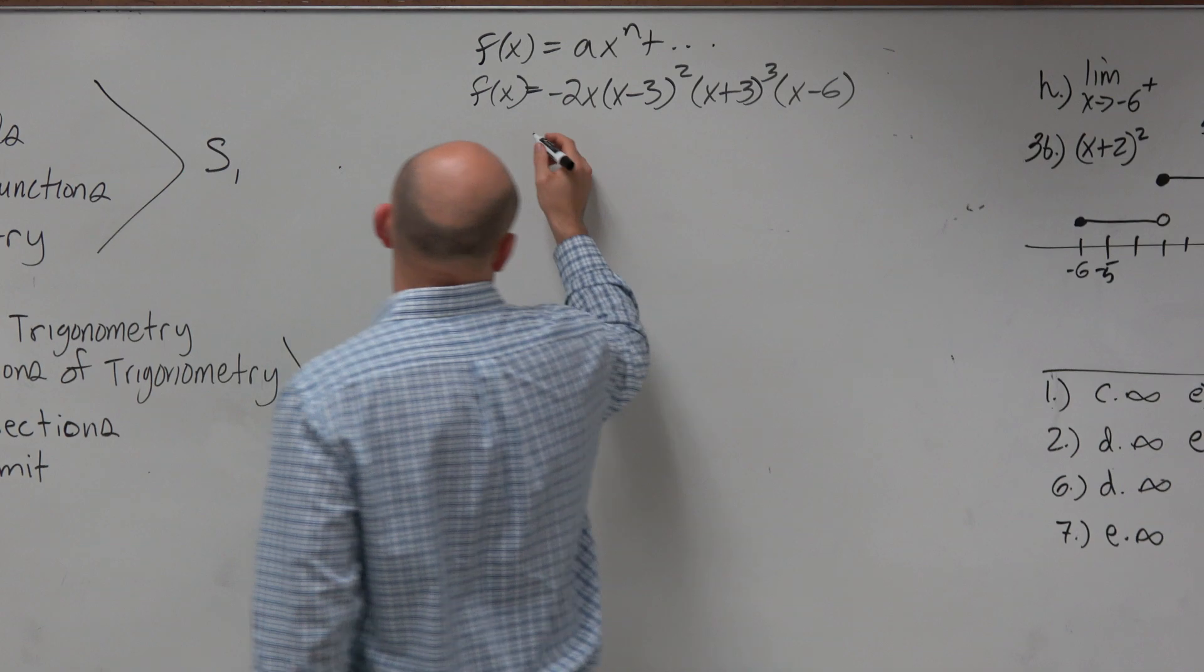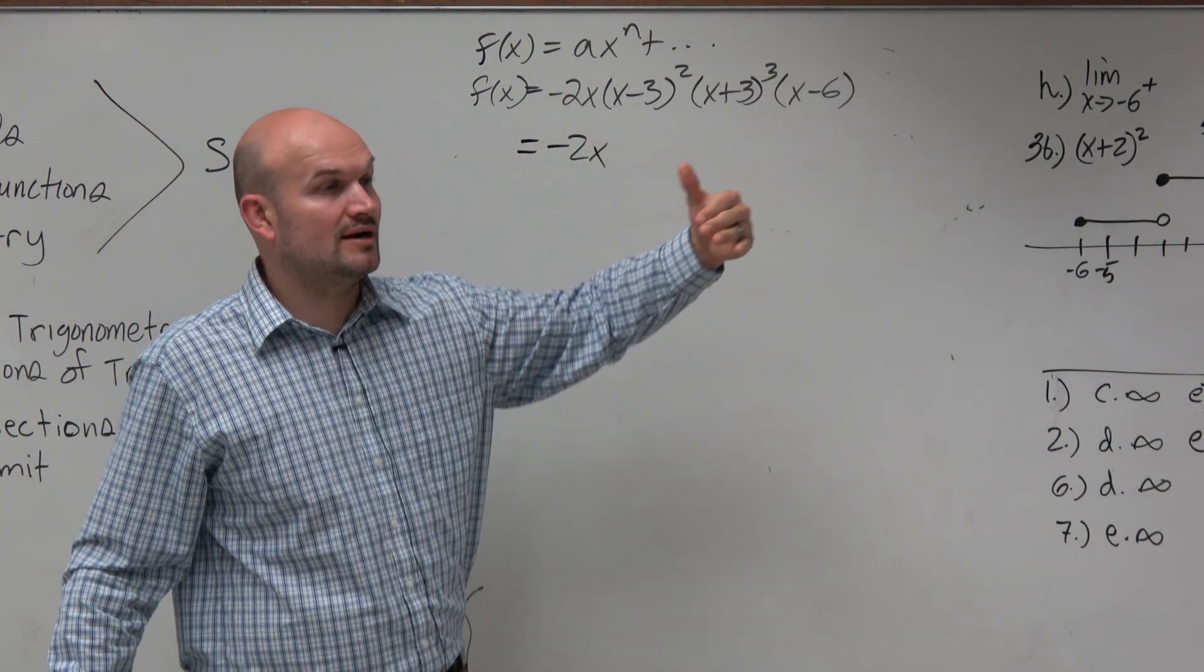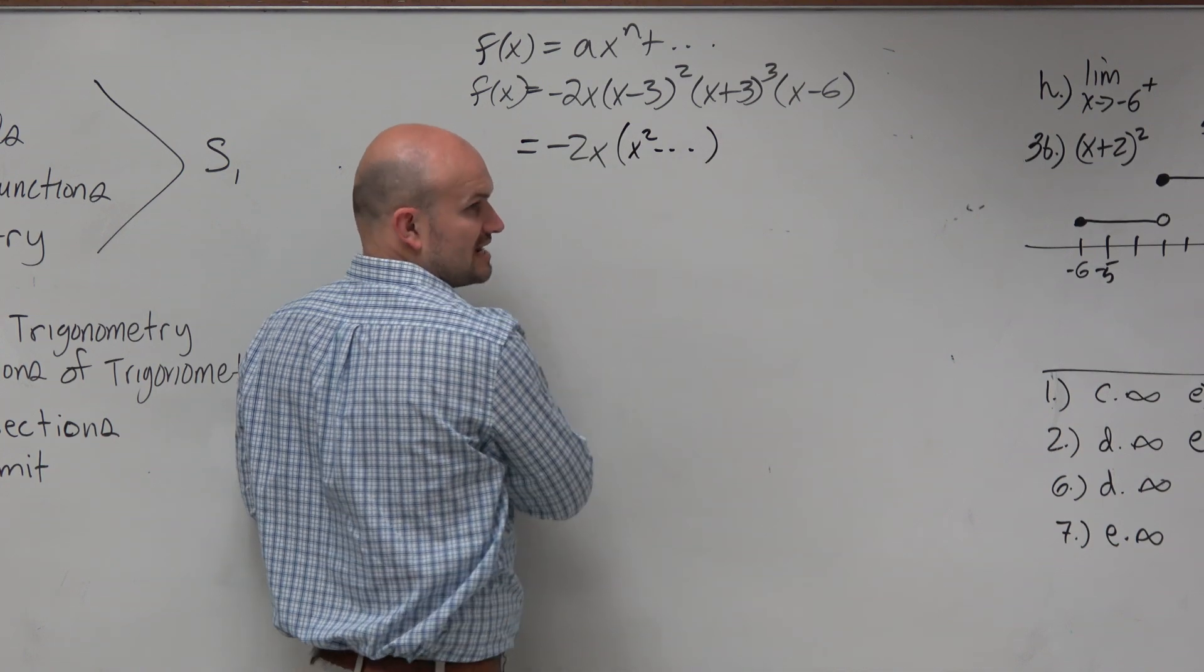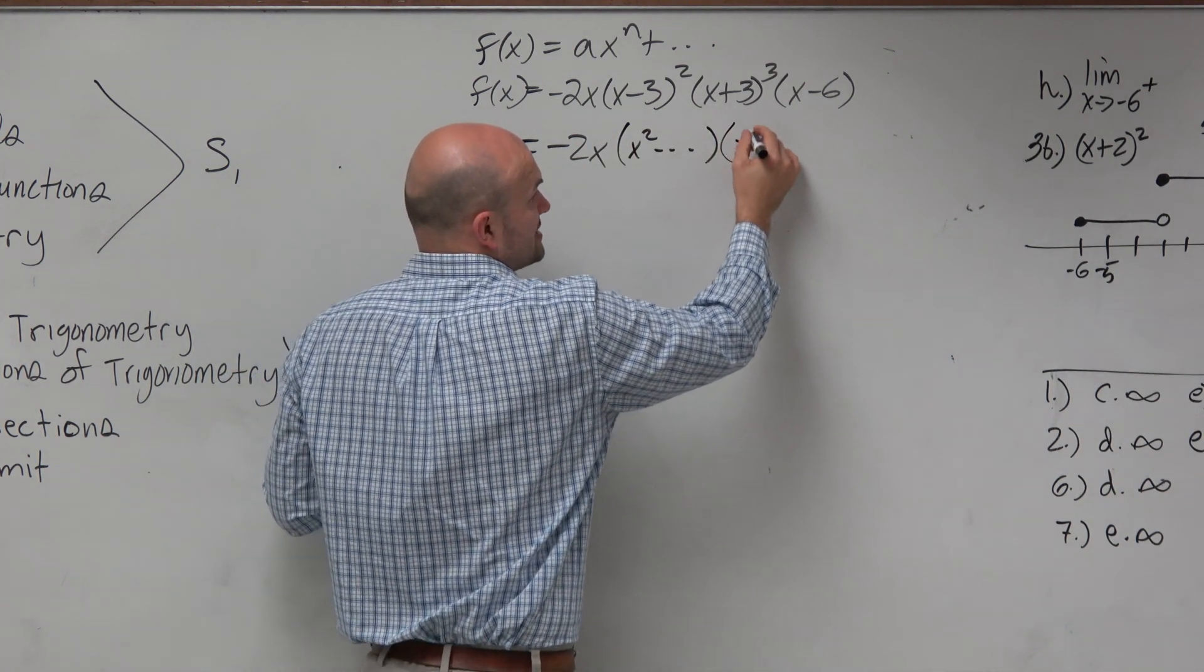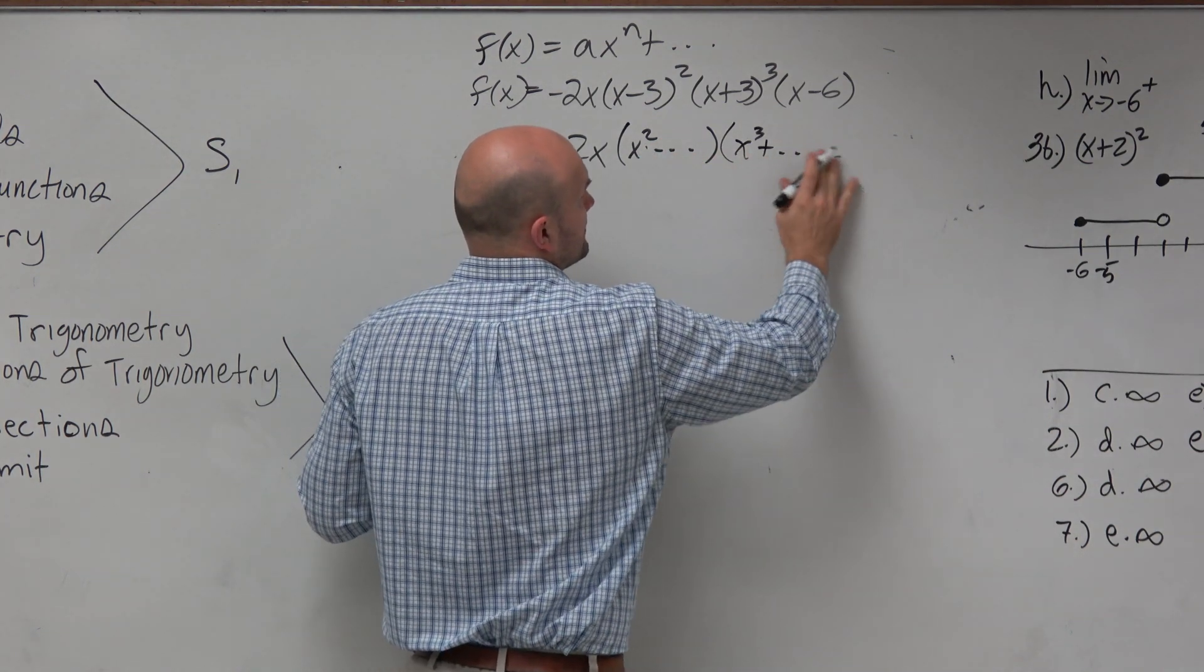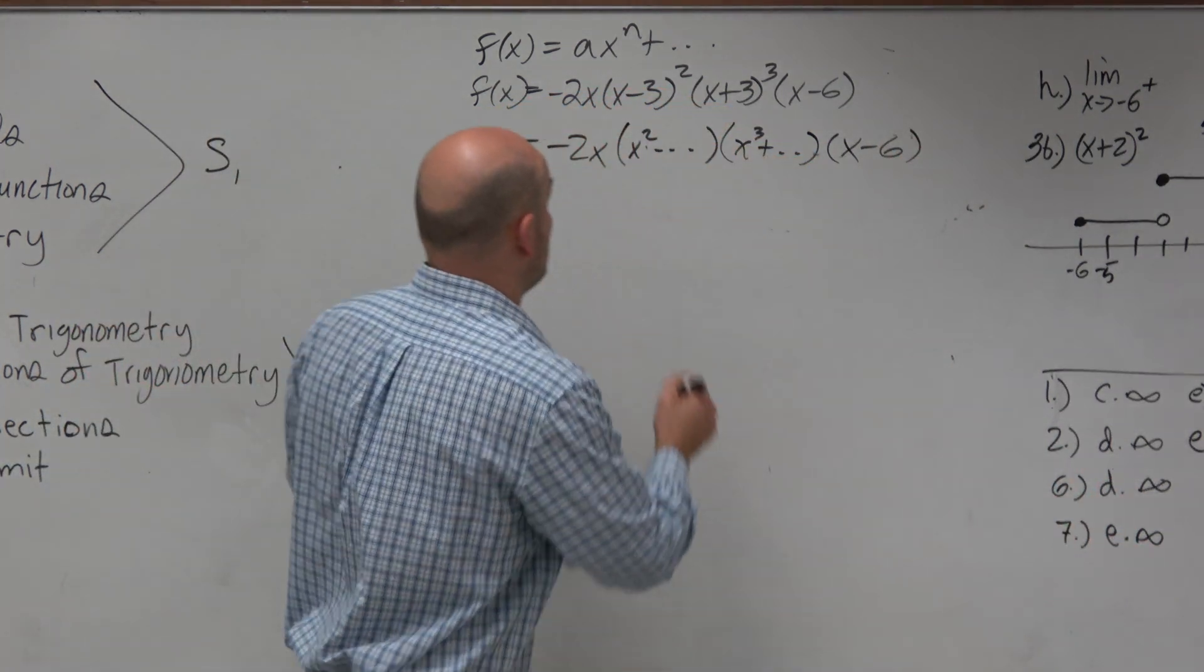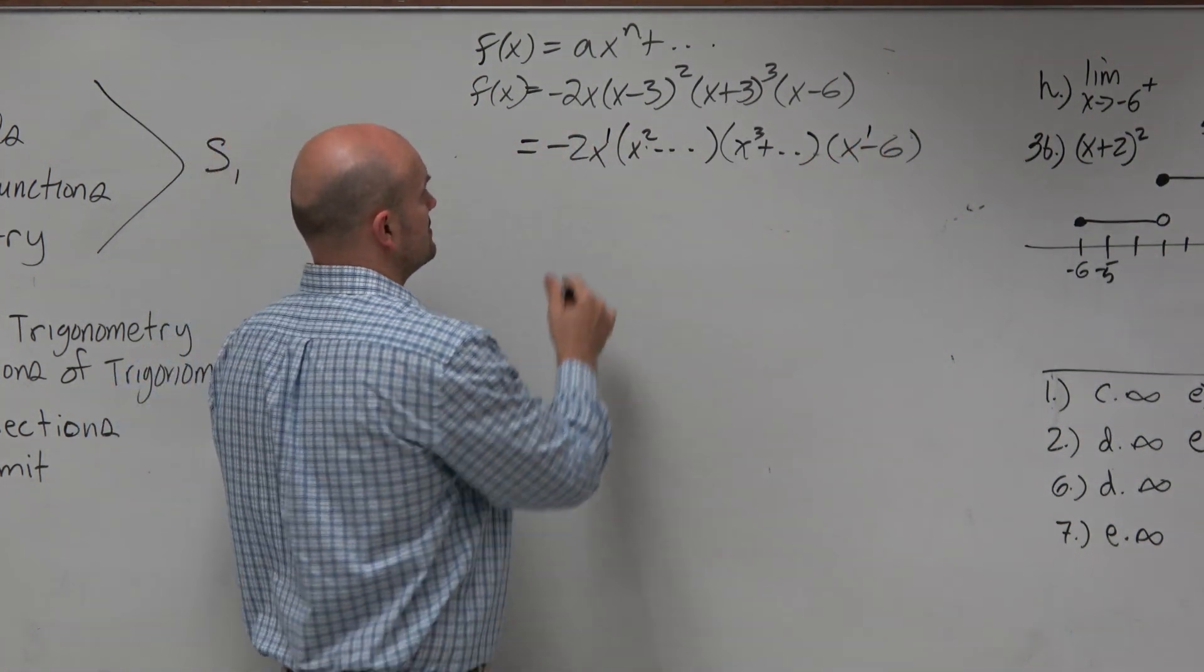So we have negative 2x. If I expand x minus 3 squared, my leading term is going to be x squared. Let's save our time and not expand, just leave it like that. x plus 3 cubed is going to give me x cubed. And then we have x minus 6. Hopefully you guys recognize if I multiply all these together, I'm basically just adding my powers. And that will give me negative x to the 7th.